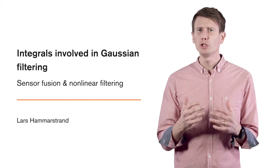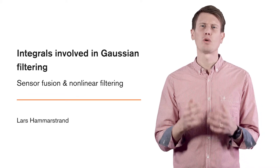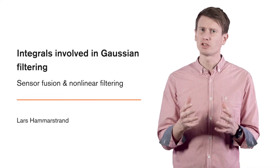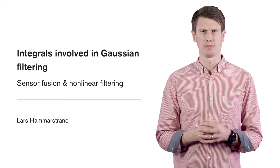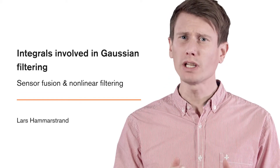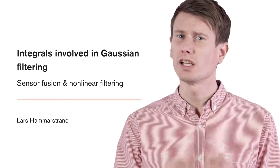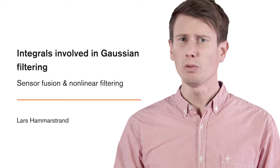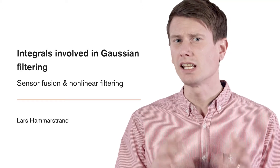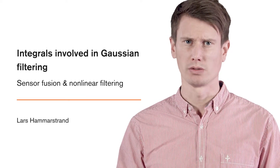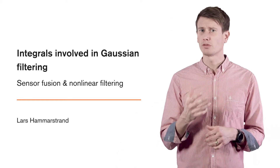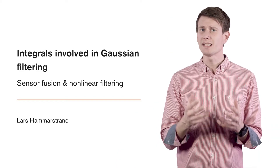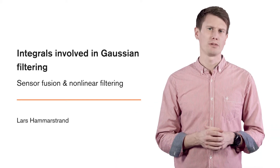In the previous video, we concluded that we need to solve five integrals of very similar types in order to perform Gaussian filtering. In this video, we will look at these integrals in a bit more detail and give a high-level explanation of common methods to approximate these integrals. We will use this as an introduction to the filtering methods that we will present in the next couple of videos. These filters make use of the so-called sigma point methods to perform Gaussian filtering.